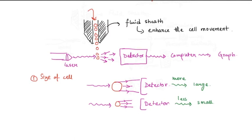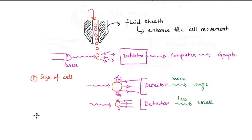There would also be some side scattering, because the cell would not only scatter light in the forward direction but also in other directions. That side scattering would be used to decipher the complexity — so the second piece of information is the granular complexity of the cell.